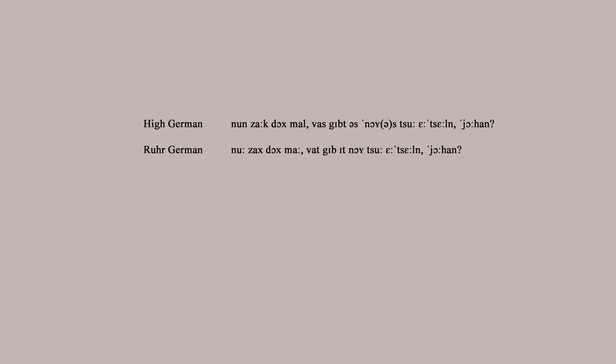Every language has accents and dialects and differences from place to place. So here I've got an example from German with the same speaker speaking in standard German and then in his regional accent from the Ruhr in western Germany. A lot of features of what's called the High German consonant shift didn't reach the rural dialects of the north and west. So that's why you have 'sach' where standard German would have 'sak,' you have 'wat' where standard German would have 'was,' and you have elision of bits and pieces at the ends of words, sometimes even inflections — so 'neu' instead of 'neues.'